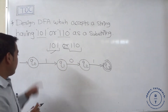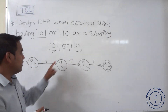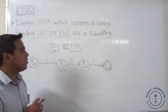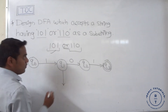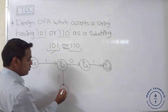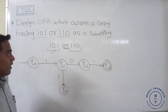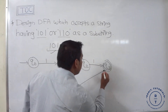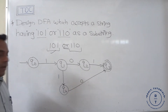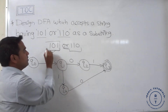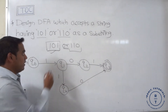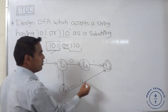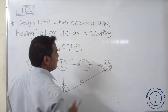What about the string 110? Whenever at Q0 state, 1 occurs, it goes to Q1. At Q1, if 0 occurs it goes to Q2, but if 1 occurs, we define another transition: 1 goes to Q4. At Q4 state, 0 occurs and it goes to the final state Q3. So this completes the minimum string accepted automata — it accepts 101 and 110 as substrings.